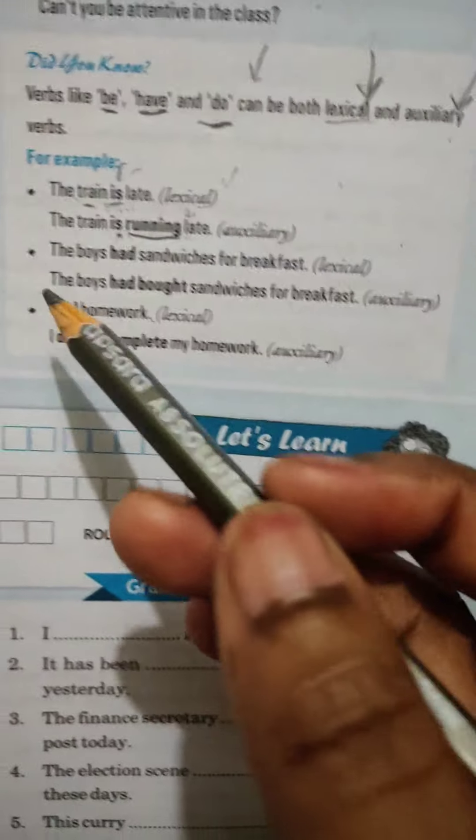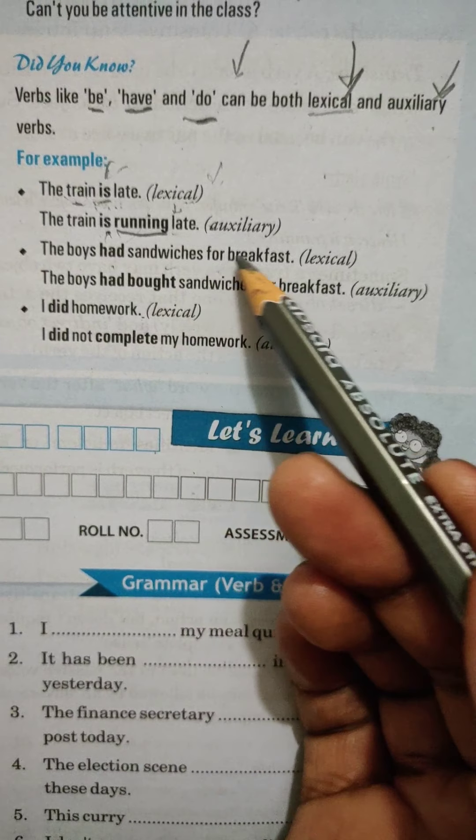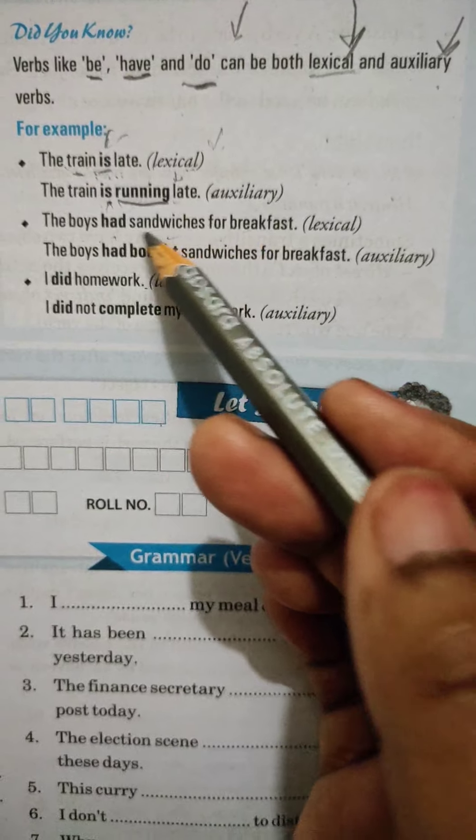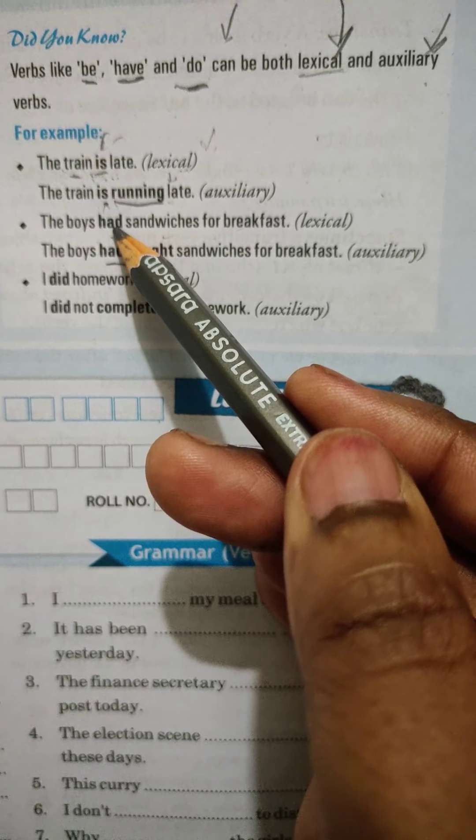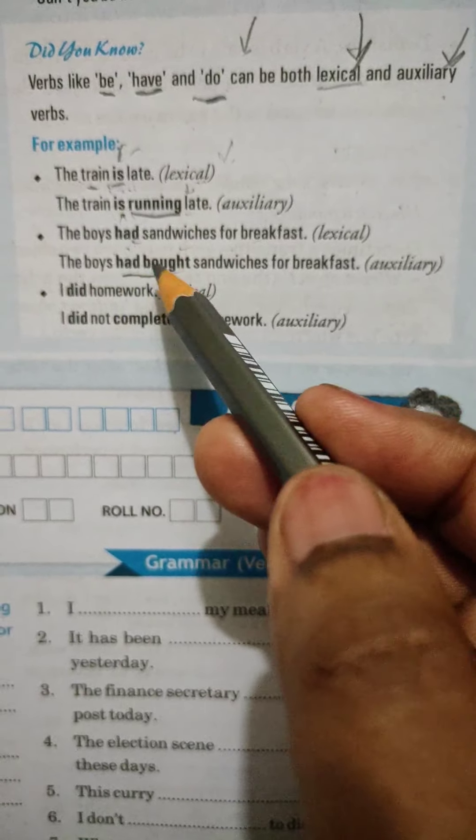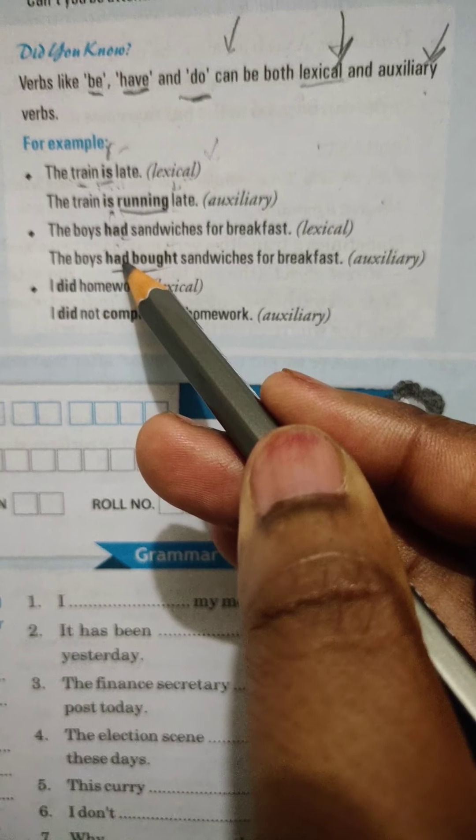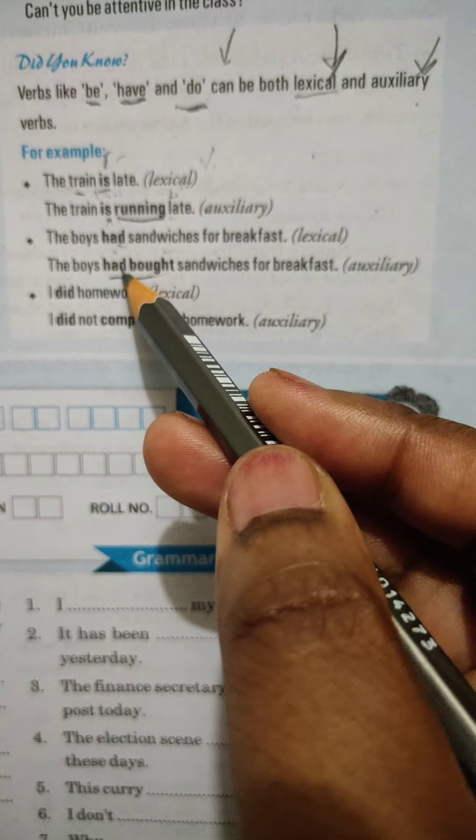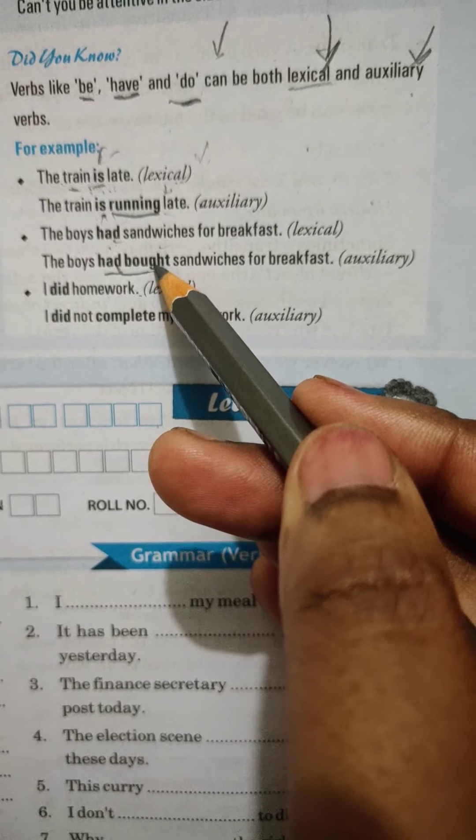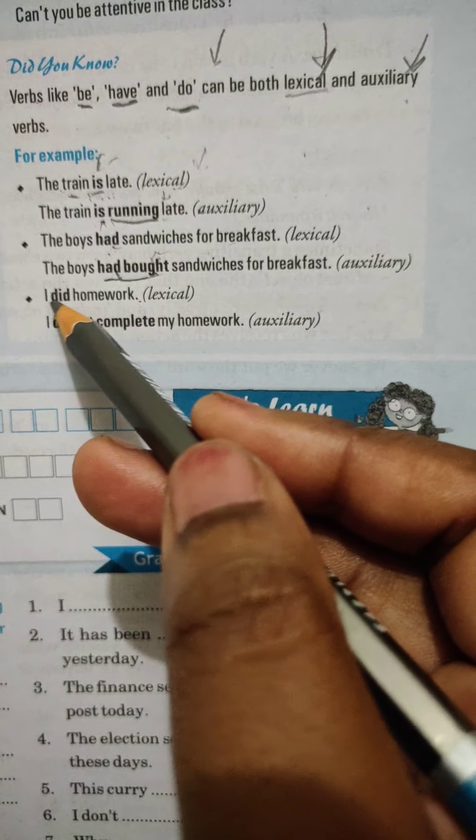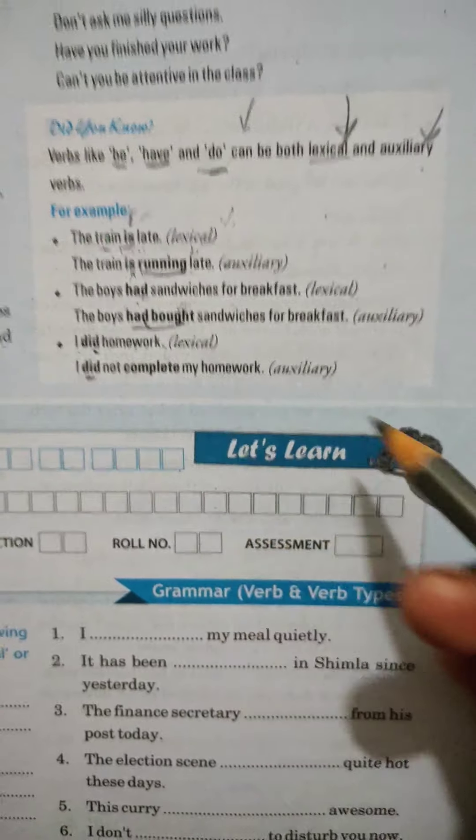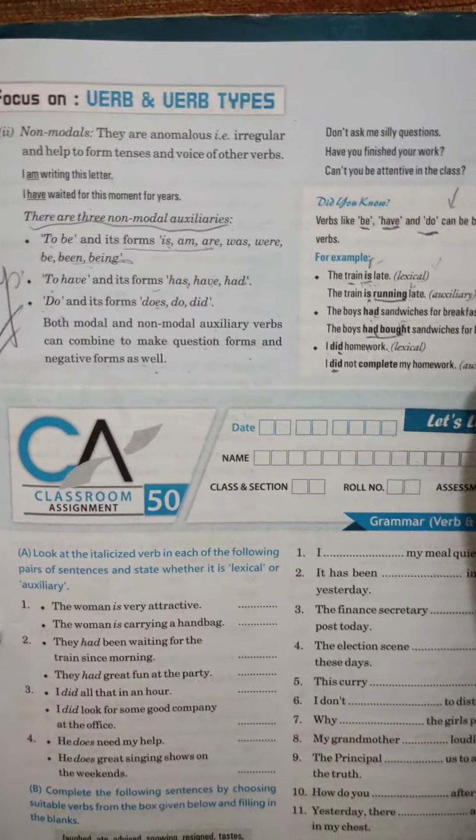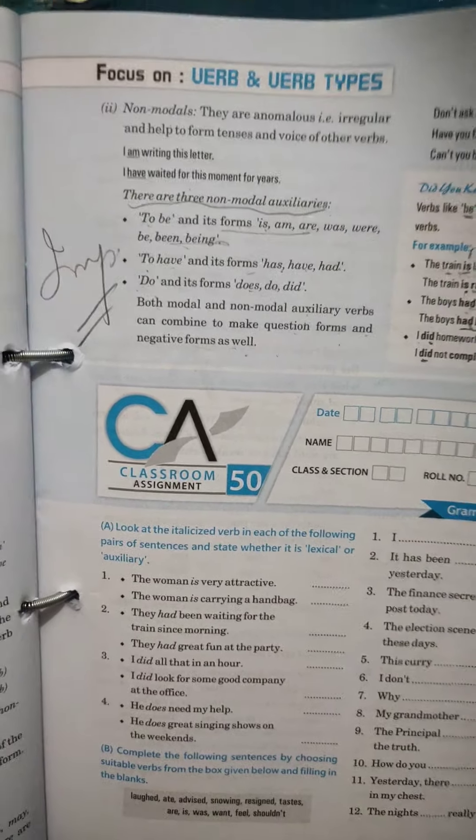So, what are you saying? The train is late. The train is running late. Now, the running word is a main verb. Running word is a main verb and is is here a helping verb. So, in the next also, let us see here. The boys had sandwiches for breakfast. Boys had sandwiches for breakfast. The boys had bought. Now, here this is acting as a main verb because no other verb is there. So, had is here in this sentence is known as helping verb, but here body will be main verb. I did homework. Here did will be main verb, but here did is helping verb. So, this is how you will have to solve.